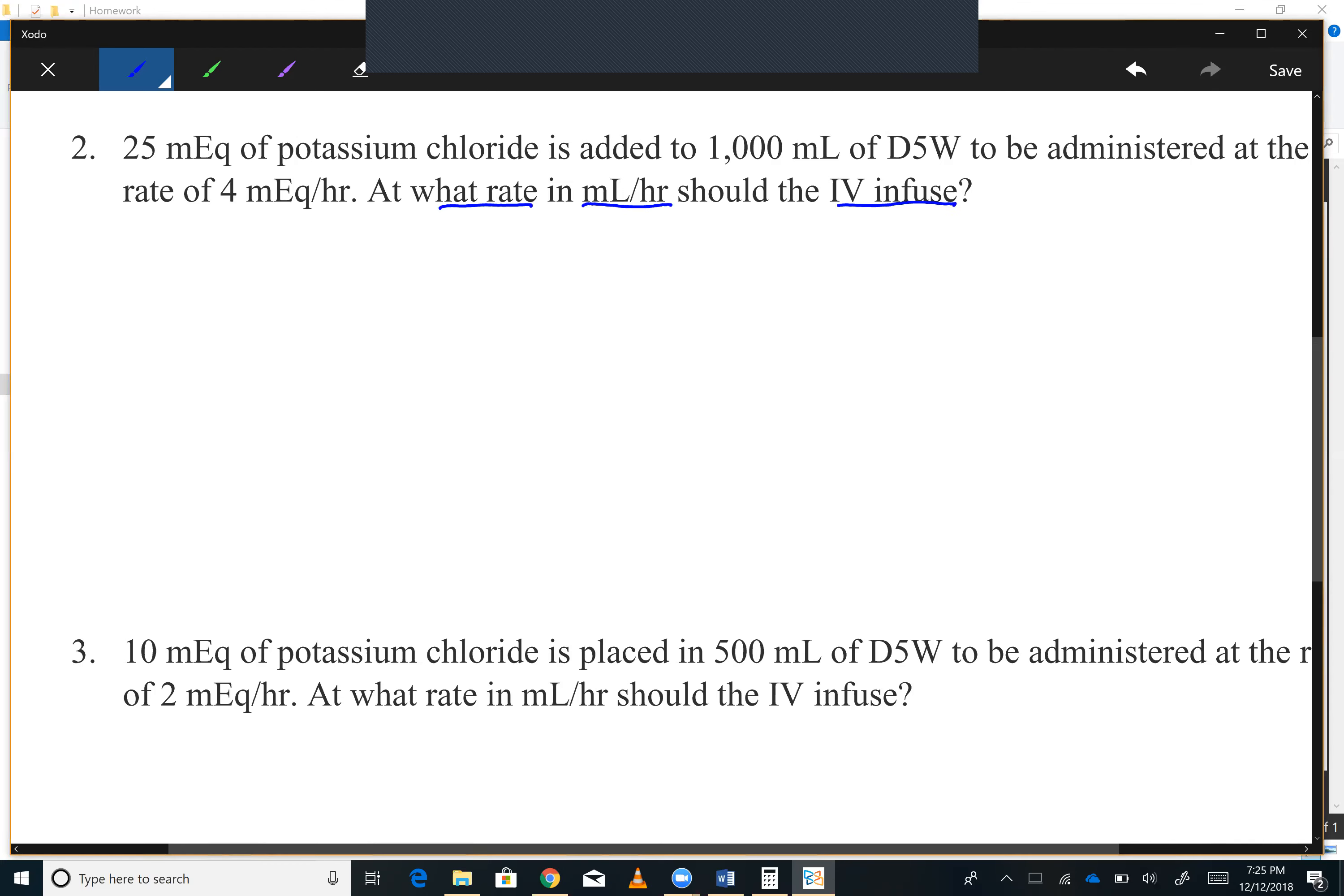Okay, so this part here, you've got 25 milliequivalents of potassium added to 1000 mLs. So that's like your dosage strength, 25 MEQs per 1000 mLs.